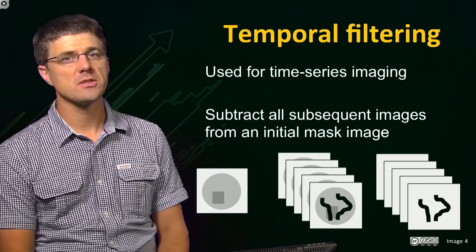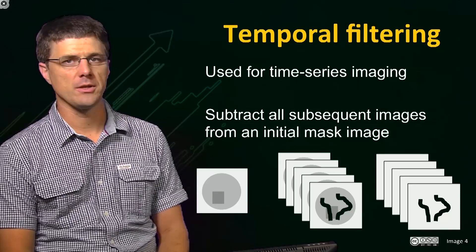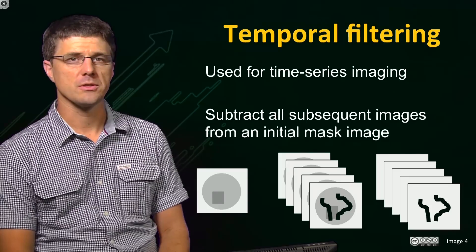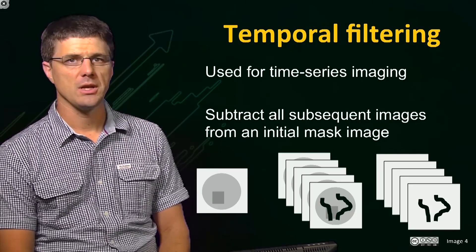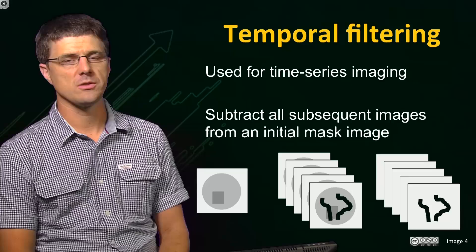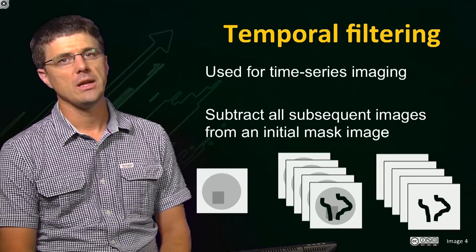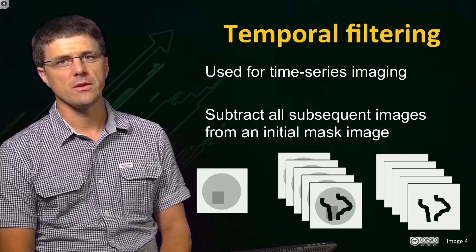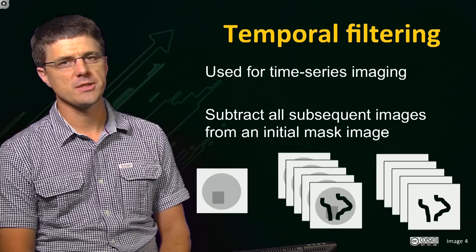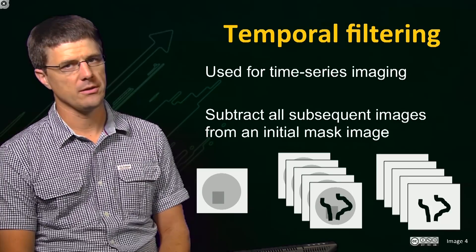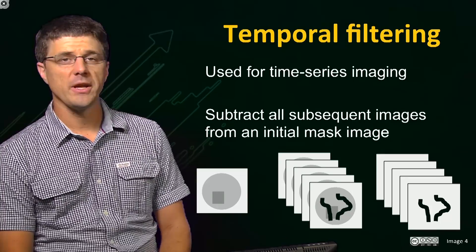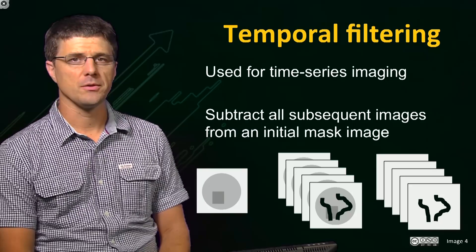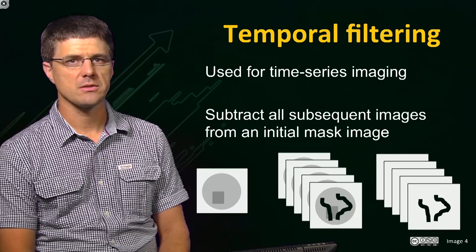This process is often used when performing image guided surgery. In order to reduce noise during a time series of images, it is common to use a temporal filtering method. In this method, only features that are common in three or more adjacent subtraction images are displayed. The main advantage of this method is that it is very effective at reducing the effect of artefacts.